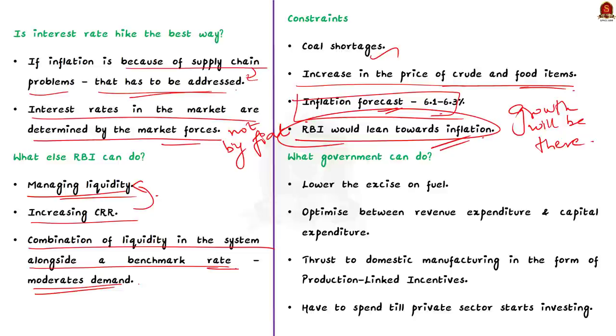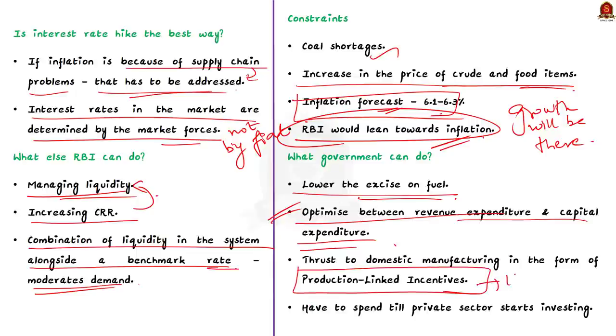Now, what can government do to make the situation better? The government can lower the excise duty on fuel. It will help alleviate price pressures from headline fuel cost. Also, the centre will have to optimize between revenue expenditure and capital expenditure. Note that the government has done exceedingly well through some of its policy initiatives during the COVID-19 years by adding significant thrust to domestic manufacturing in the form of production-linked incentives for 15 sectors. This is to be appreciated.